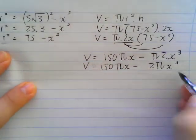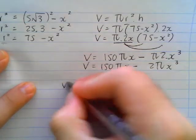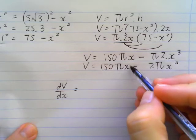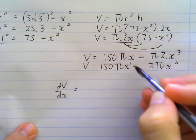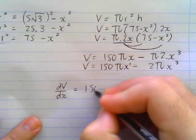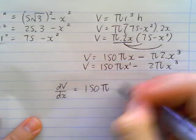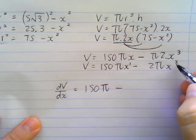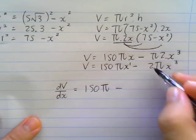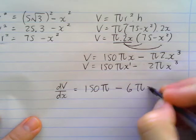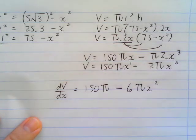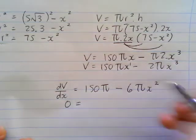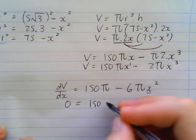In order to maximize our answer here, we are going to find the first derivative of our function. So dV/dx = 150π - 6πx². Now in order to have a maximum, we're going to make our first derivative equal to 0 and solve for x. 150π - 6πx² = 0.